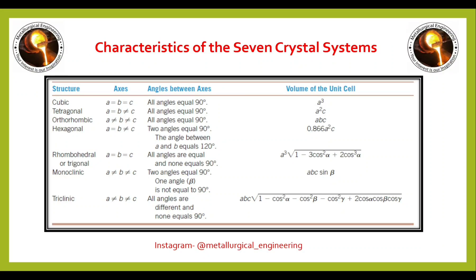There are seven crystal systems. The first is cubic, second is tetragonal, third orthorhombic, fourth hexagonal, fifth rhombohedral or trigonal, sixth monoclinic, and the last is triclinic. The most symmetric crystal system is cubic and the least symmetric is triclinic.